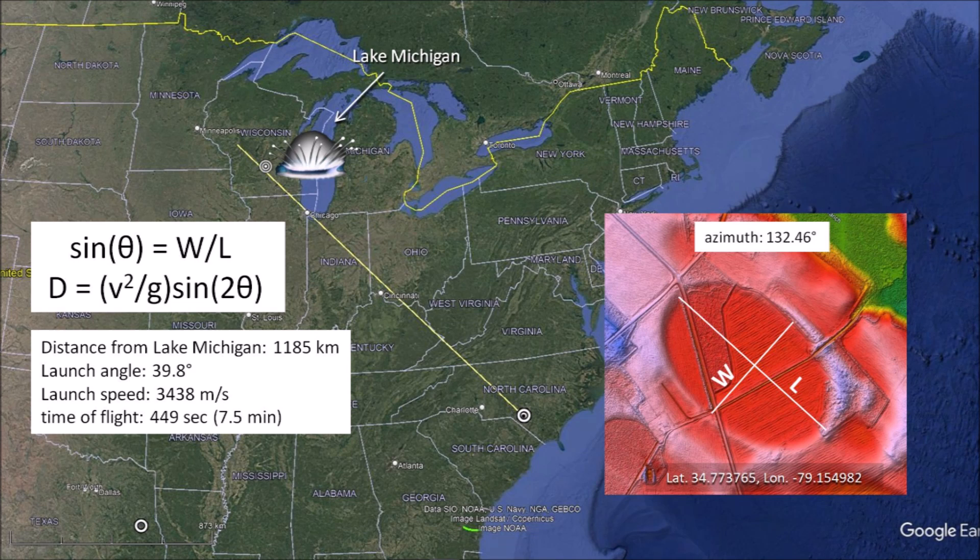The launch angle is calculated from the width to length ratio. Notice that the mass of the projectile is not included in the ballistic equation, so it does not influence the calculation for launch speed. All the basins at this location in North Carolina, regardless of their size, would have been made by projectiles of different sizes but with initial speeds determined by the launch angle.